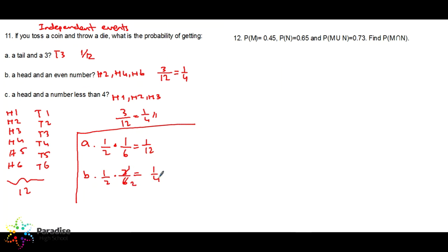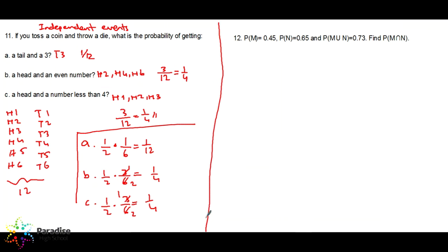Simplifying 3 over 6 gives 1 over 2, so the result is 1 over 4 — the same answer. For a head and a number less than four: probability of a head is 1 over 2, and probability of a number less than four is 3 over 6, which is 1 over 2 — making 1 over 4. For independent events, the total outcomes are the product of individual outcomes: a coin gives 2, a die gives 6, so total is always 12.